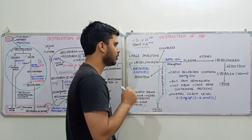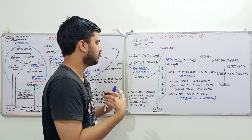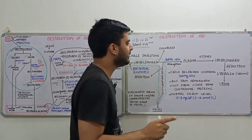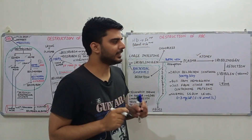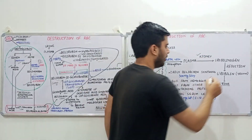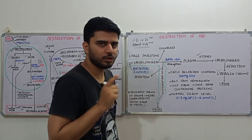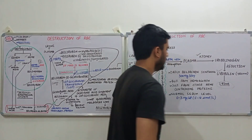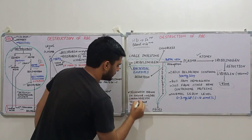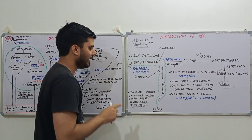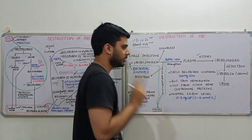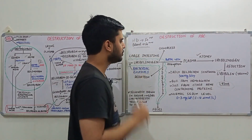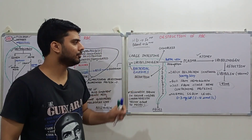The other fate of urobilinogen is that it can be absorbed by enterocytes. After absorption, it enters the portal vein and via the plasma reaches the kidneys. Within the kidneys, urobilinogen is reduced into urobilin, which is pale yellow. Therefore, the color of urine is yellow because of urobilin. To summarize: the color of feces is yellow due to stercobilin, and the color of urine is yellow due to urobilin.